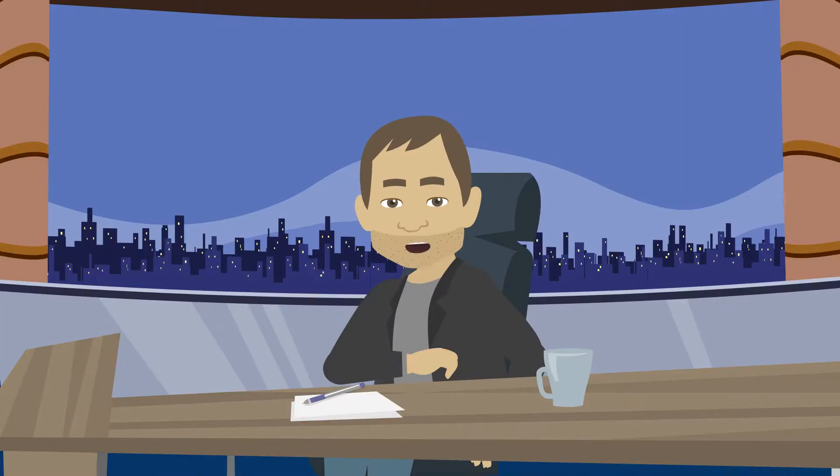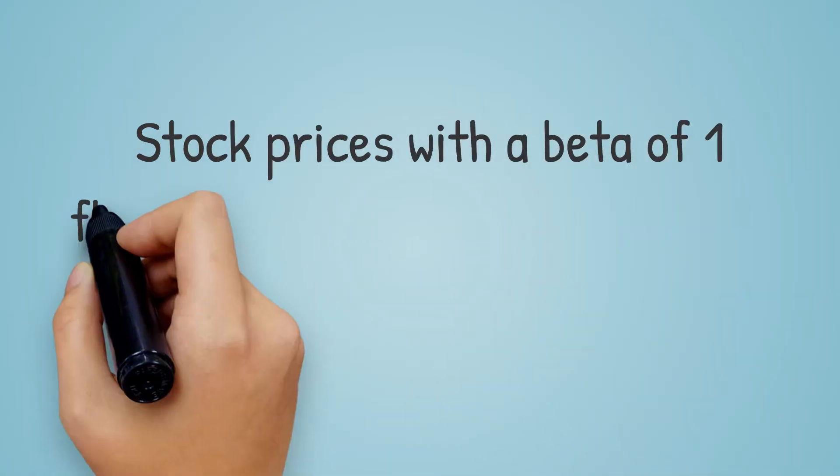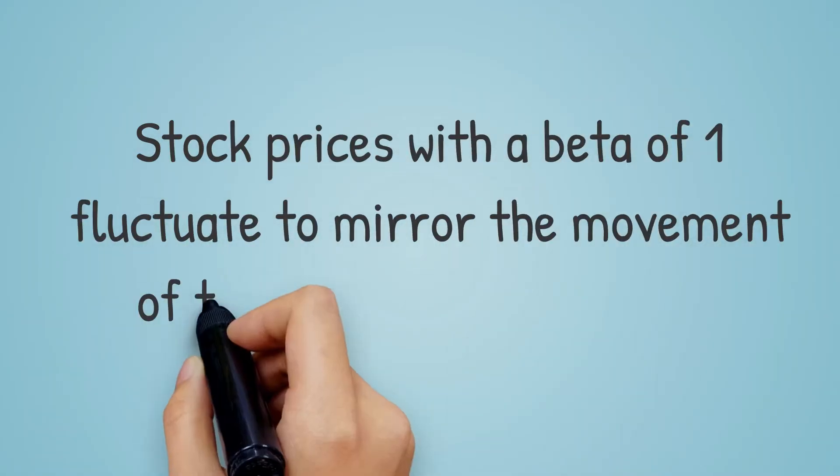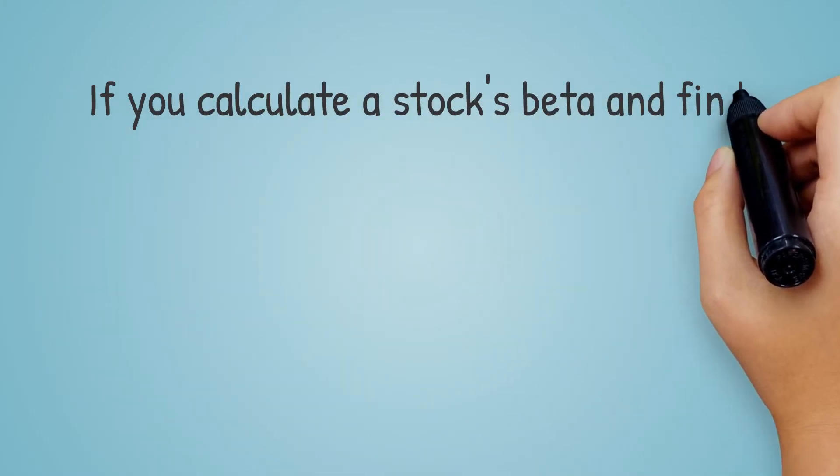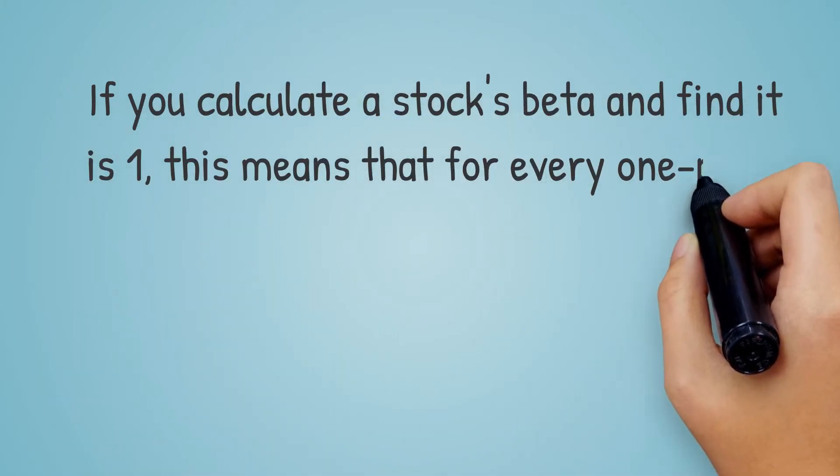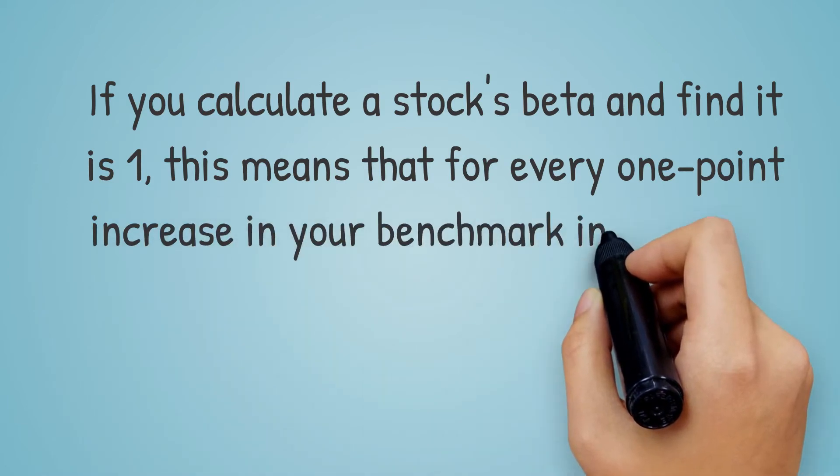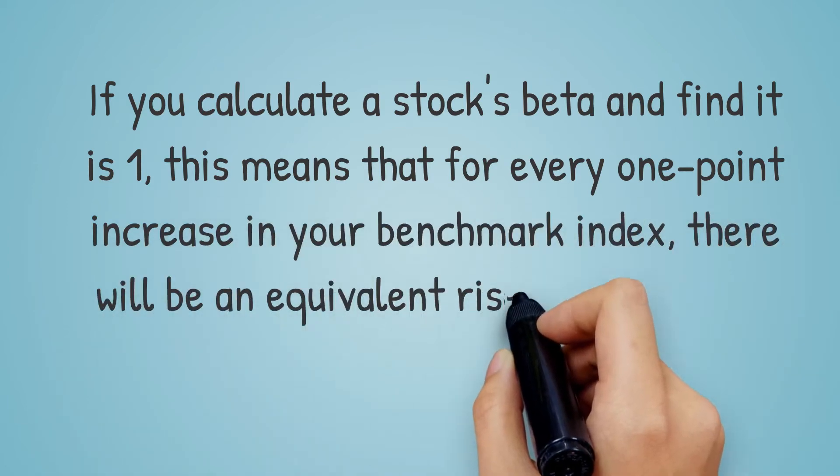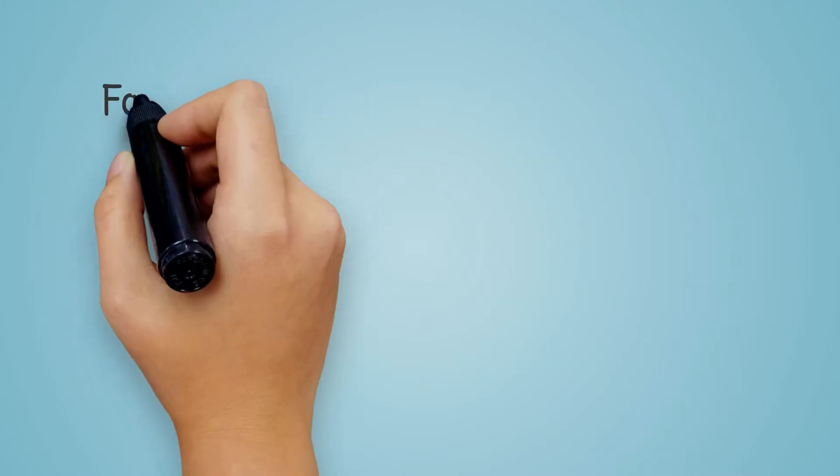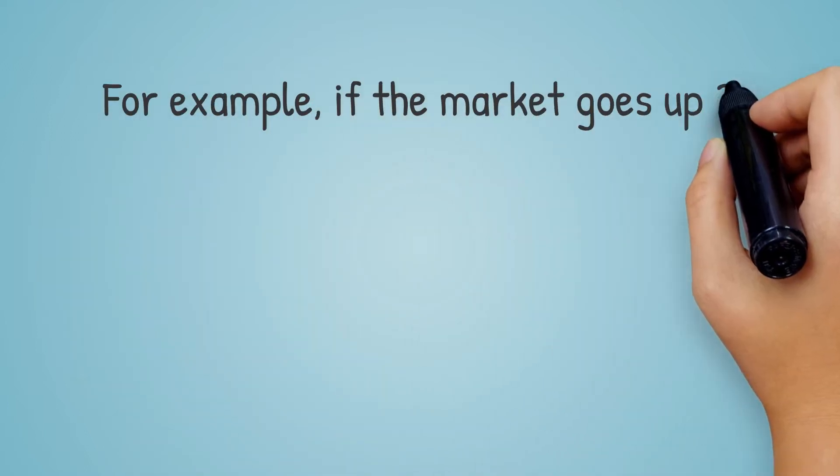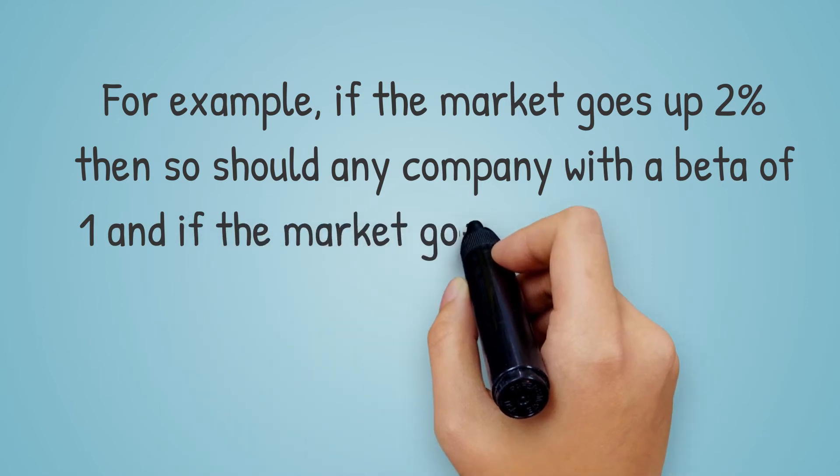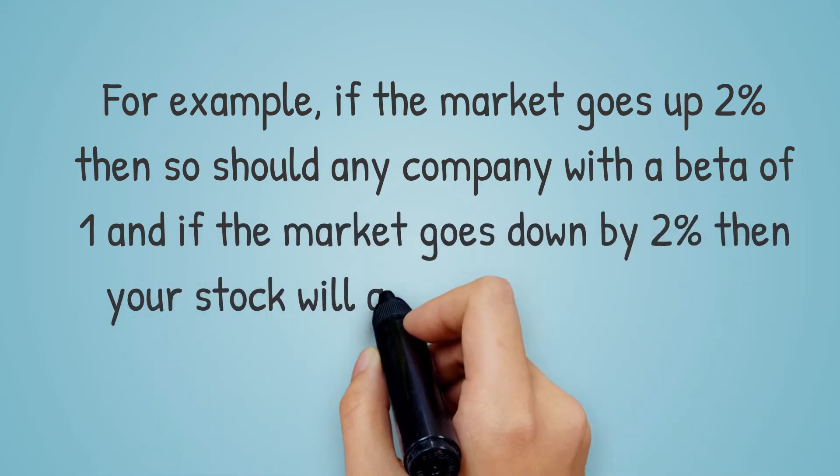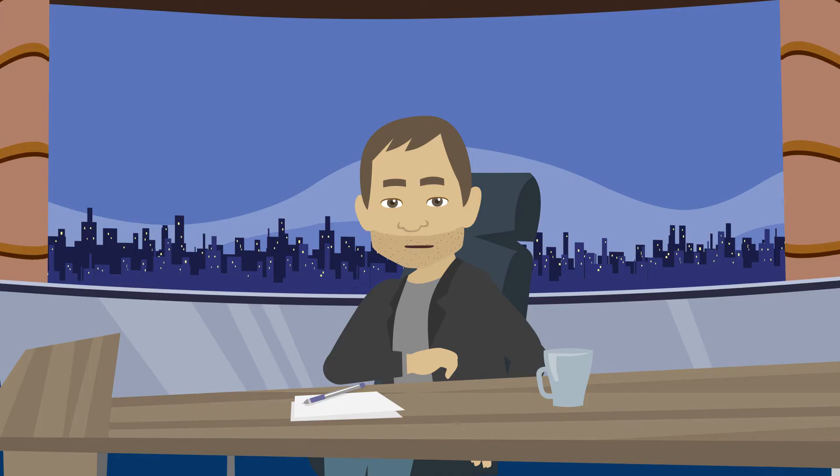Another thing is to expect that a stock with a beta of 1 will move in lockstep with the market. Stock prices with a beta of 1 fluctuate to mirror the movement of their index counterparts. If you calculate a stock's beta and find it is 1, this means that every 1 point increase in your benchmark index, there will be an equivalent rise or fall in your stock's price too. For example, if the market goes up 2%, then so should any company with a beta of 1. And if the market goes down by 2%, then your stock will also go down by 2%, and vice versa.